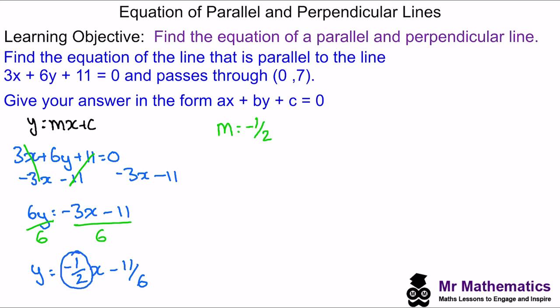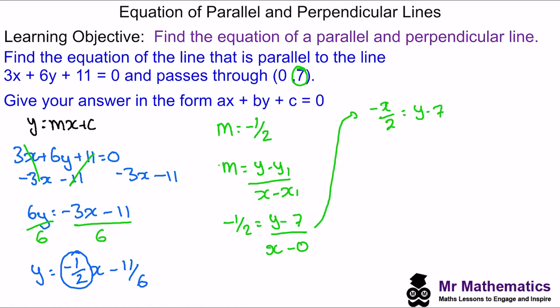This means that the gradient of a parallel line will also be negative one half. We can use the equation for the gradient of a line — the change in y divided by the change in x — to work out the equation of this parallel line. So negative one half equals y minus 7 over x minus 0. By moving the x to the other side, multiplying both sides by 2, and moving x and y to the same side, we arrive at the equation of the parallel line.